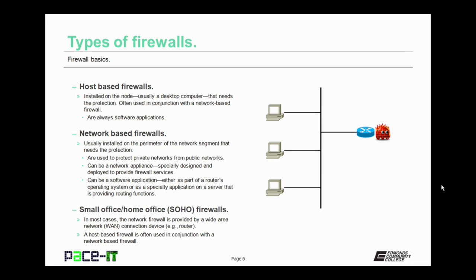Then there are network-based firewalls. Usually these are implemented on the perimeter of the network segment that needs the protection. They're used to protect private networks from public or outside networks. Network-based firewalls can be a network appliance — specially designed and deployed to provide only firewall services — or a software application, either as part of the router's operating system or as a specialty application on a server that is providing some routing function.